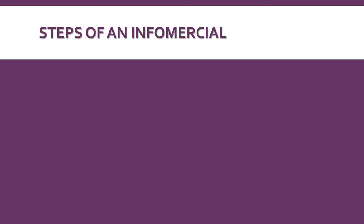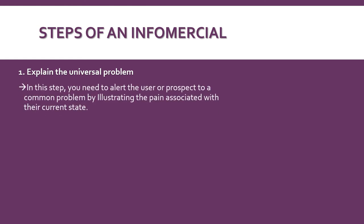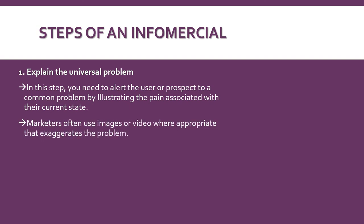Here are the steps of an infomercial. First you're going to explain the universal problem. In this step you need to alert the user or prospect to a common problem by illustrating the pain associated with their current state. Marketers often use images or video where appropriate that exaggerates the problem.